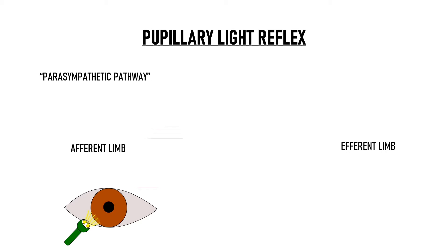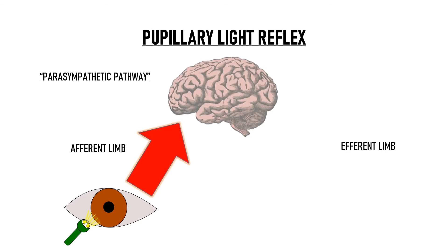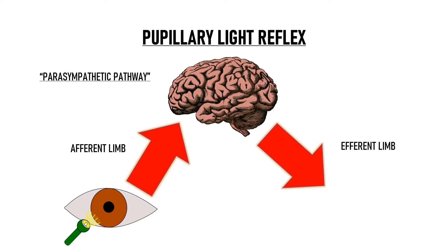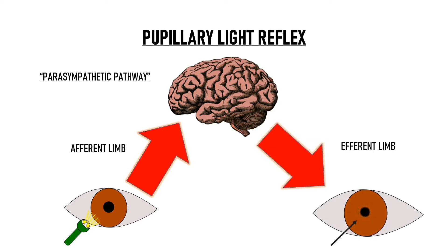Since in this video we are talking about the light reflex pathway, we will restrict ourselves to only the parasympathetic pathway that results in constriction of the pupil via the sphincter pupillae muscle. The pupillary light reflex pathway is a parasympathetic pathway with an afferent limb and an efferent limb. The afferent limb carries sensory stimulus to the brain, and the efferent limb carries signals from the brain to the effector organ — the sphincter pupillae muscle.